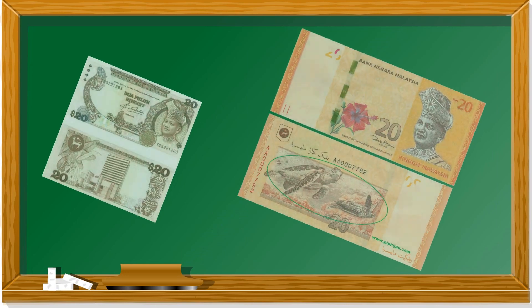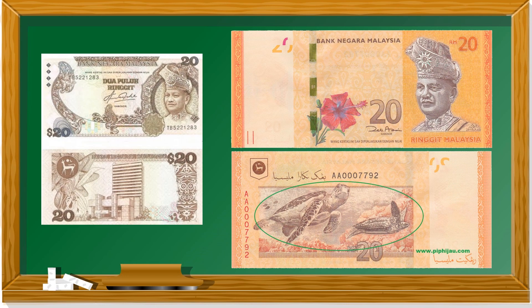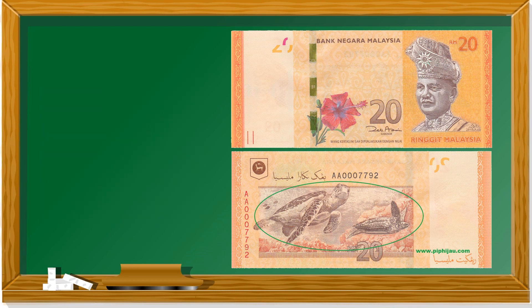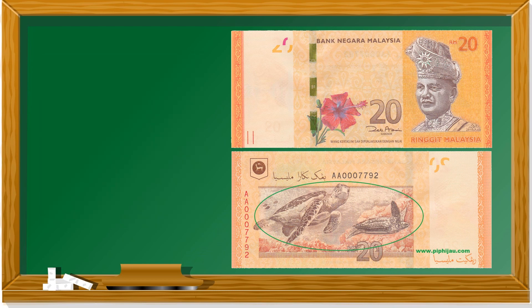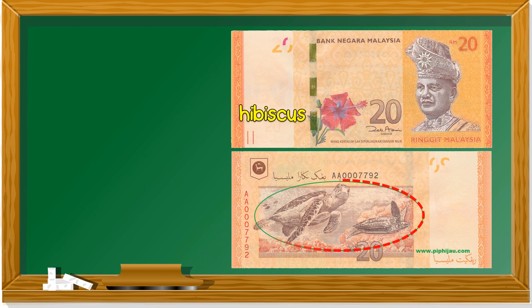Let's take a look at the twenty ringgit note. This is the old twenty ringgit note - it's brown. Let's take a look at the new twenty ringgit note. What color is it? It's orange. In front, we have the hibiscus flower. How about at the back? These are turtles.